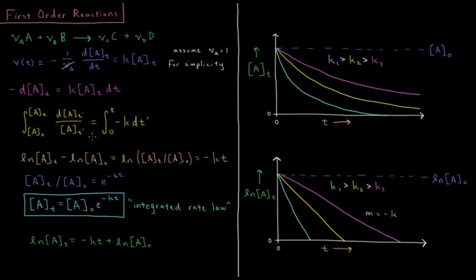So if we integrate both sides, we're going from t equals zero to t equals t, or t prime equals zero to t prime equals t. At t equals zero, the concentration is A naught. At t equals t, the concentration is A of t. So when we do both of these integrals,